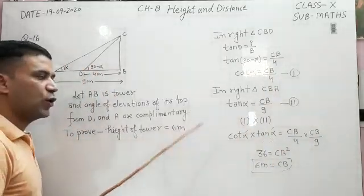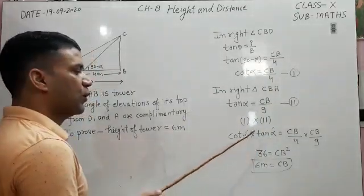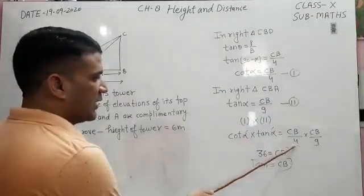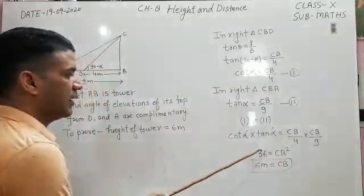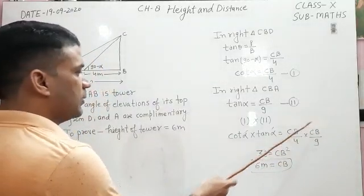Cot theta and tan theta are reciprocal of each other. The multiplication of two reciprocals is 1, so here is 1. And 9 times 4 is 36, which gives CB squared equals 36.